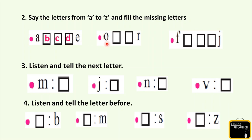Next is O - what will come after O? Very nice, P. And then Q. O, P, Q, R. Very good. Next we have F - what will come after F? G, H, I, and J is already written here.